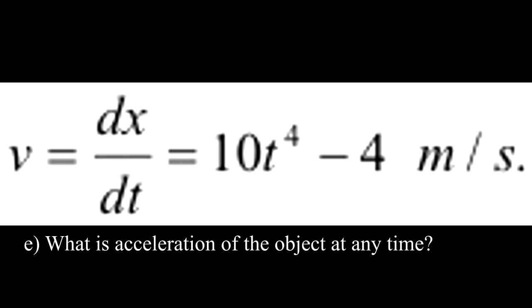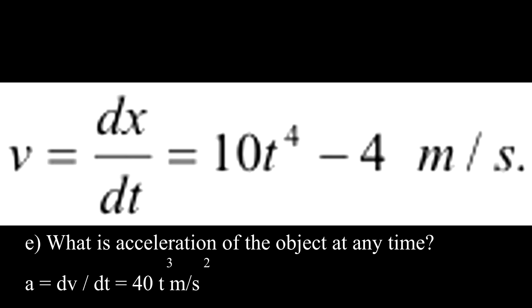Question E. What is the acceleration of the object at any time? Taking a derivative again, we have a equals dv dt equals 40t cubed measured in meters per second squared.